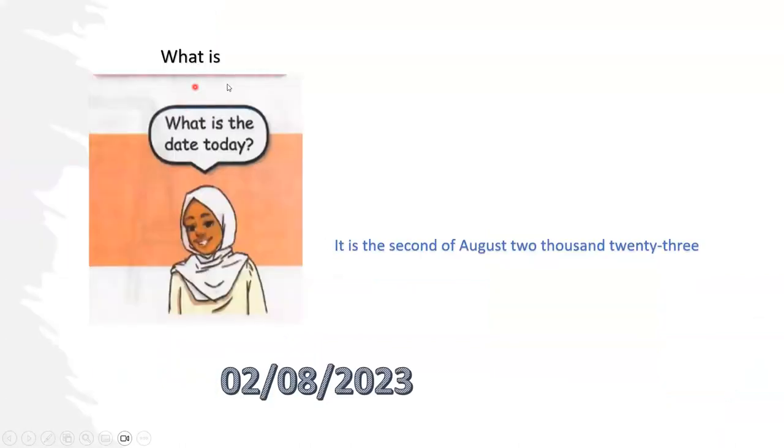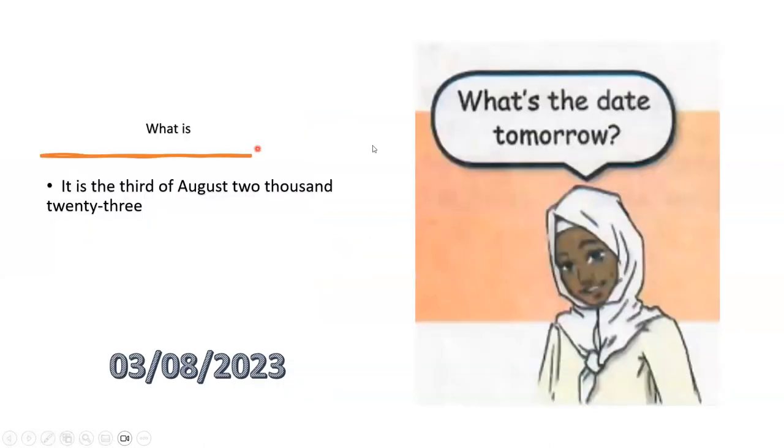What is - if you want to ask about the thing which is in the present, I will ask with 'what is.' What is the date today? It is the second of August 2023. And also if I want to ask about tomorrow, I will say: what is the date tomorrow? Tomorrow is the third of August 2023.